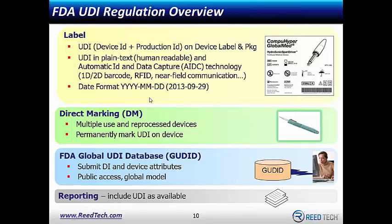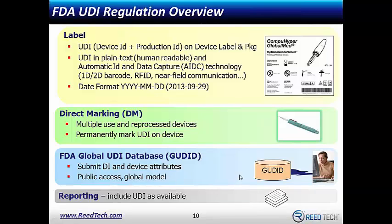If a product takes direct marking, those are multiple-use and reprocessed devices and the permanent mark is put on the device. Part of the mandate says the FDA is going to build a global unique device identifier database — the GoodID — and all labeling information that passes through FDA validation will be put into the GoodID, which sometime early this year is going to be open for public access. It's a global model, and other regulatory authorities will do similar things, though probably not identical. The UDI will also be used in downstream reporting — for instance, an adverse event report will include a UDI.